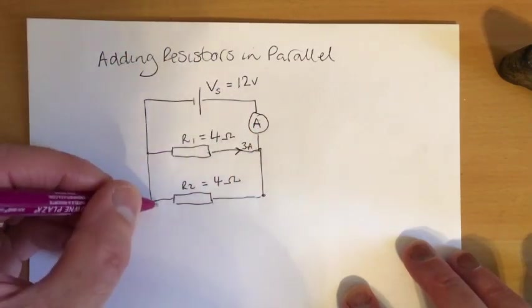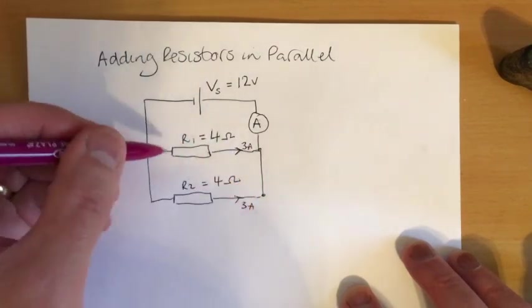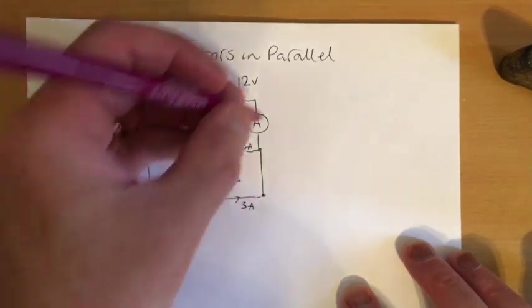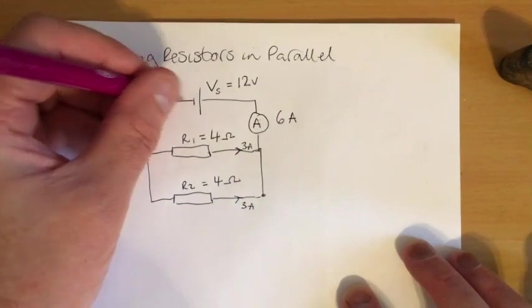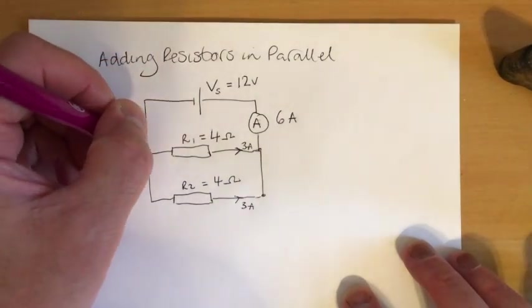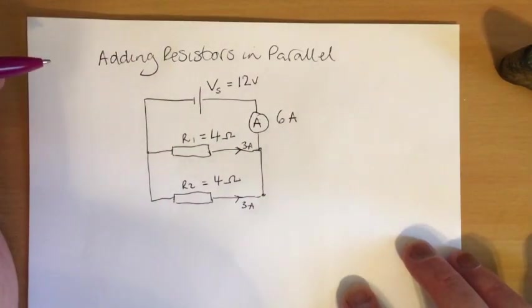This is a completely separate path. So we would also get 3 amps flowing through this one. And 3 going that way, and 3 going that way means we get 6 amps coming out the battery. 3 going that way, 3 going that way, and then 6 amps going back to the battery.